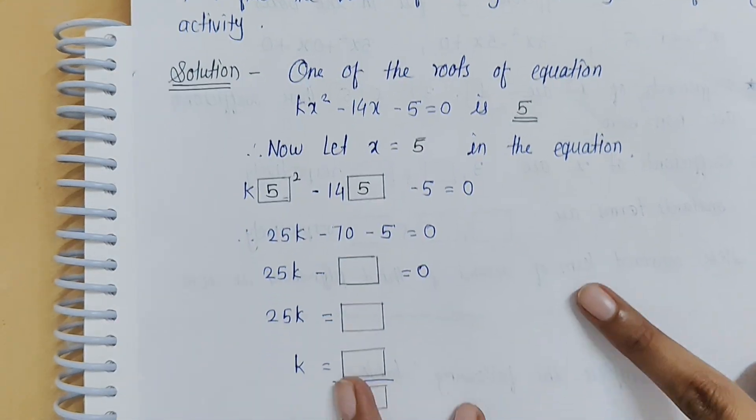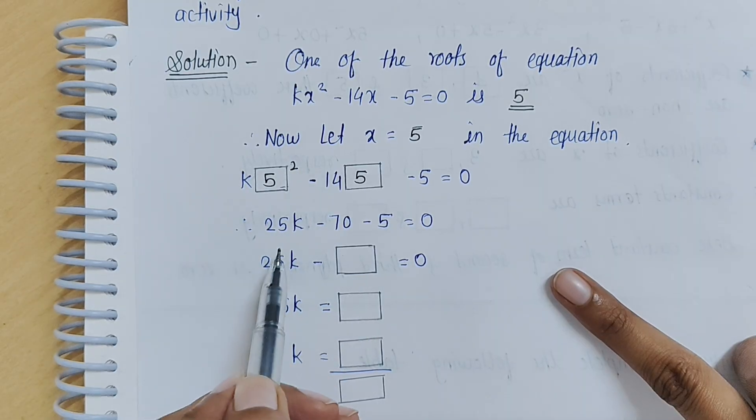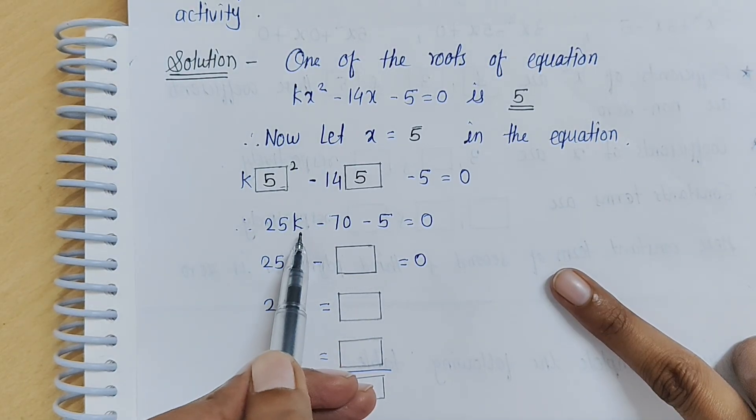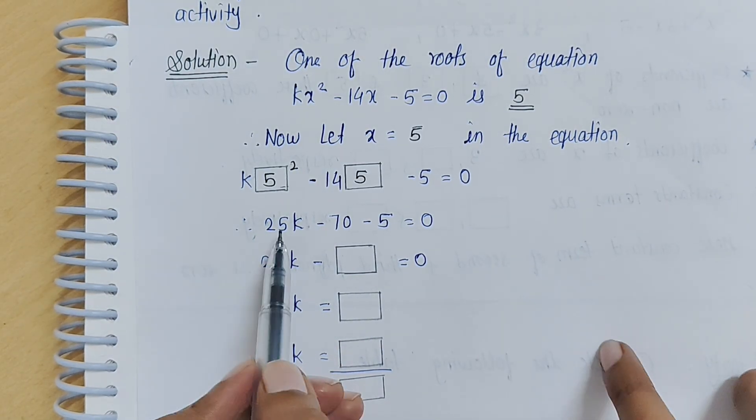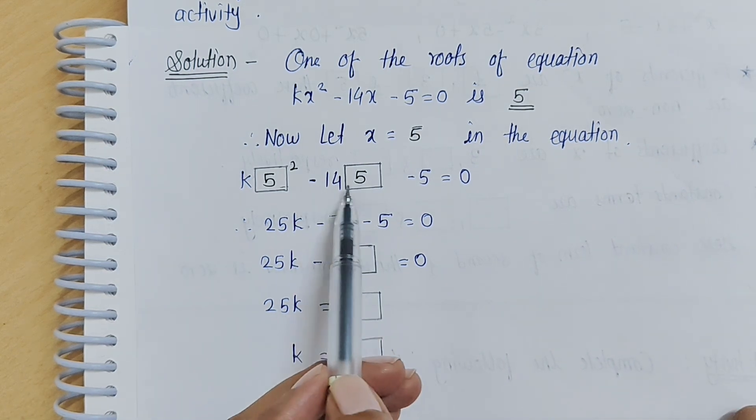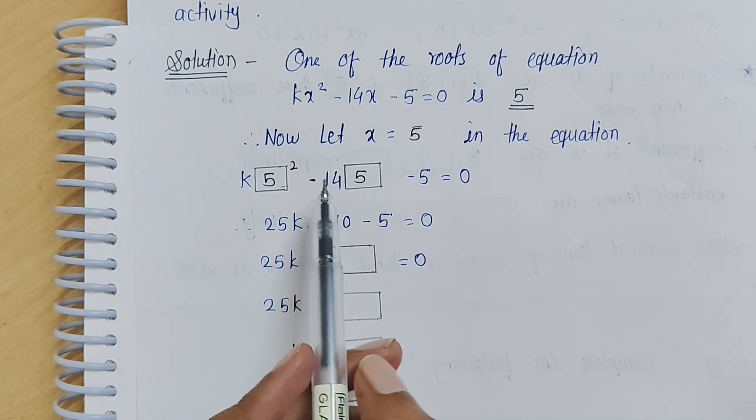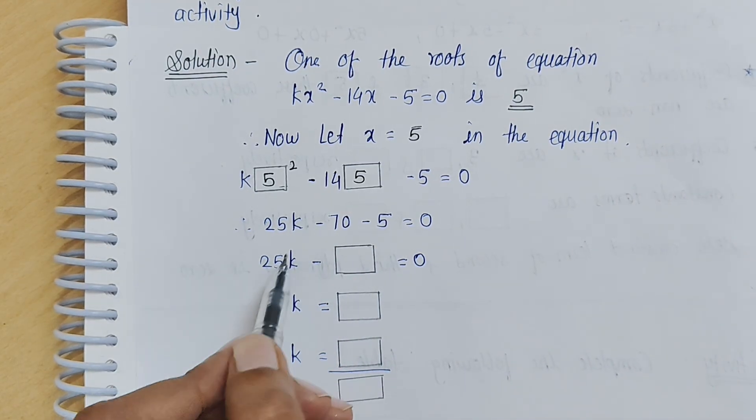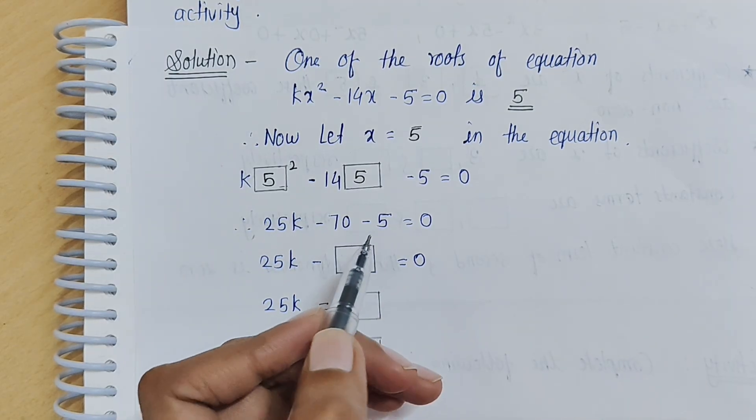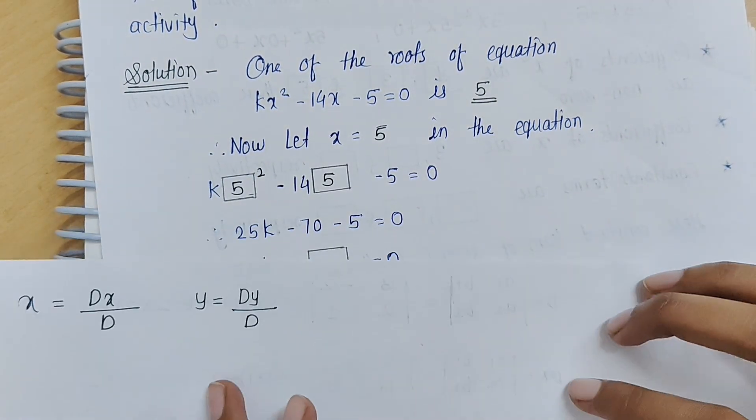Now we have to calculate this. k into 5 square, so 5 squared is equal to 25, k into 25 is 25k. So 25k minus 70 (14 times 5 which is 70) and minus 5 as it is. Now 25k as it is equals minus 70 minus 5, so minus minus, the addition equals 0.